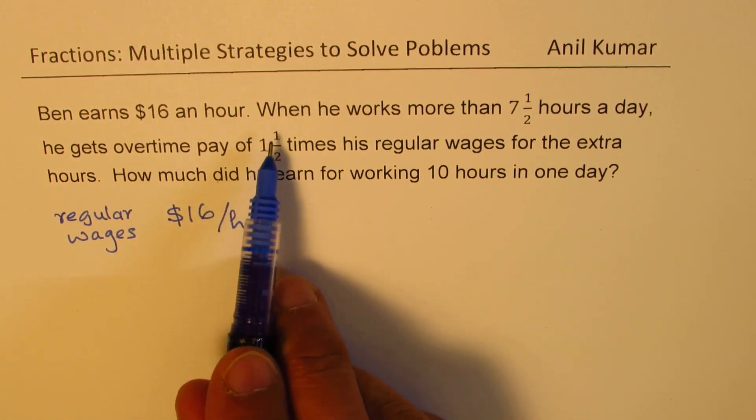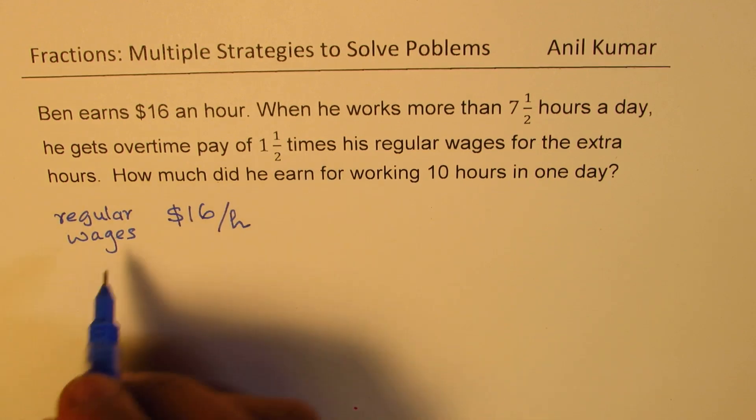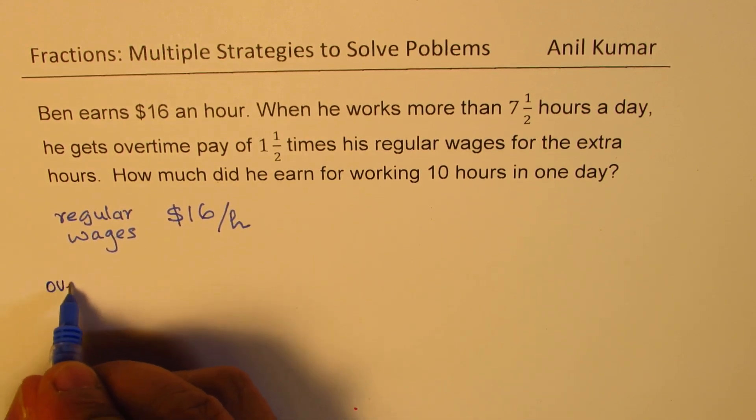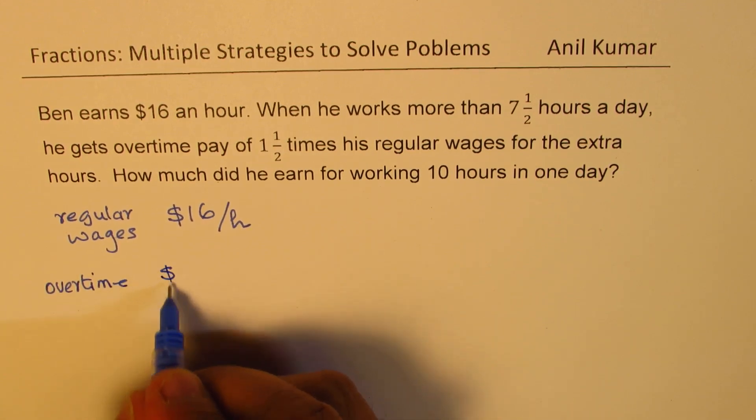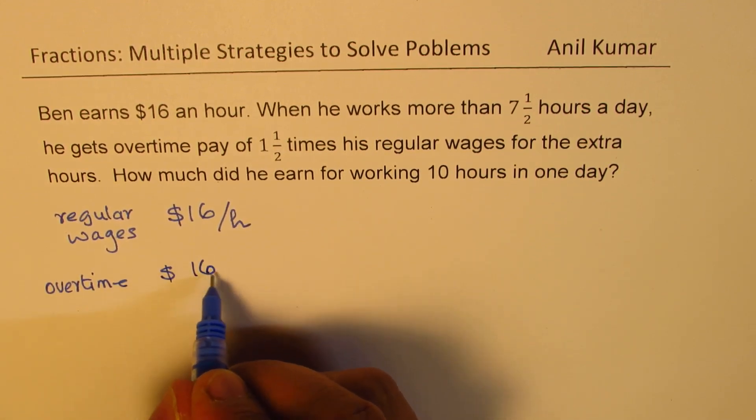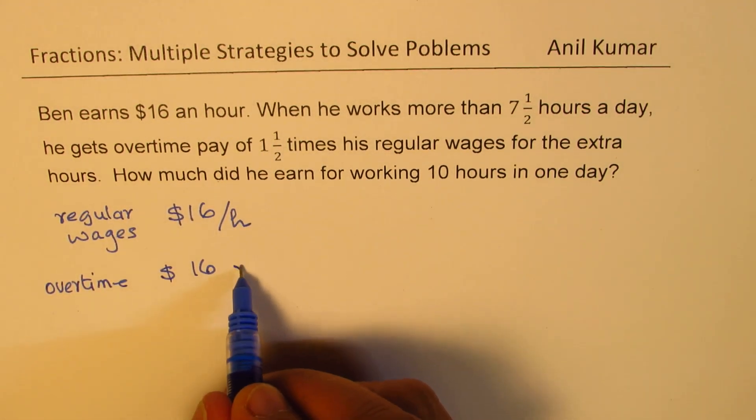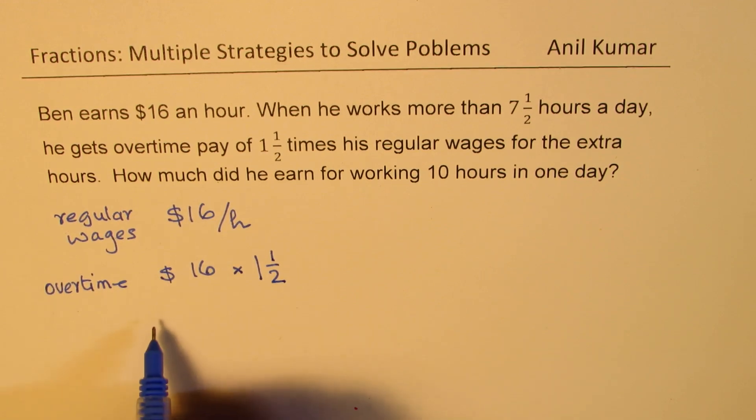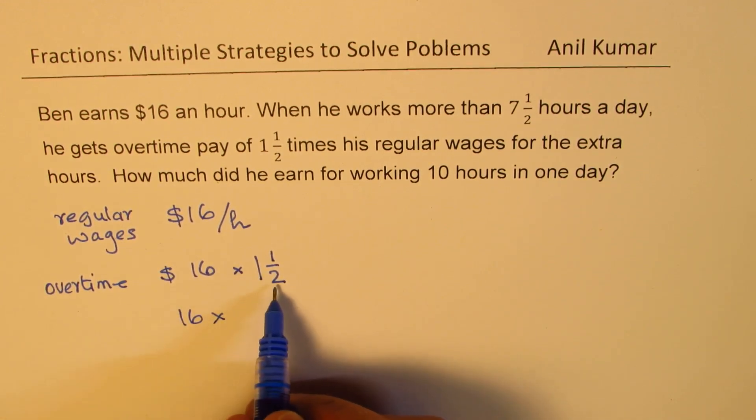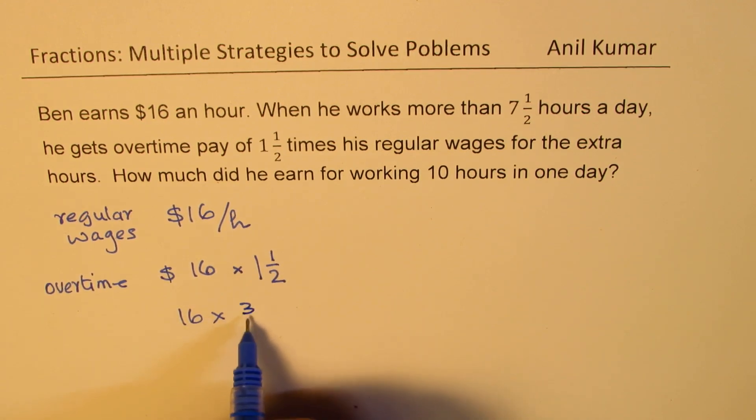Now overtime is 1 and a half times, right? We say overtime rate will be how much? So normally it is 16 and will be 1 and a half times. So we used to multiply this by 1 and a half. So basically it is 16 times, you will write this as an improper fraction. 1 times 2 plus 1 which is 3 over 2.